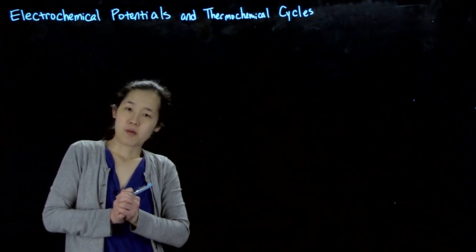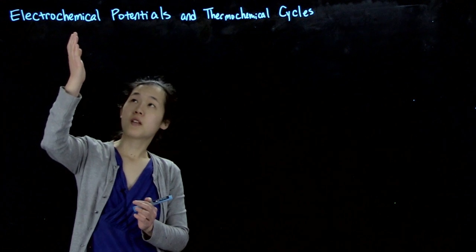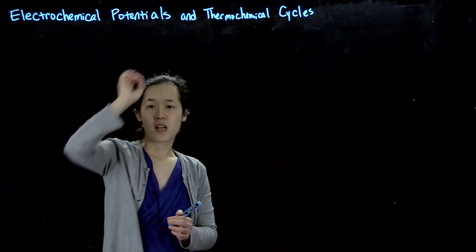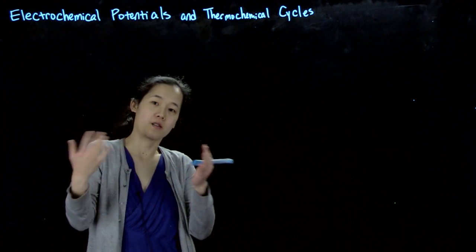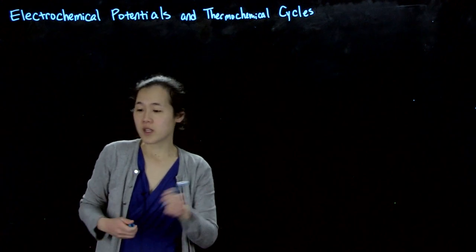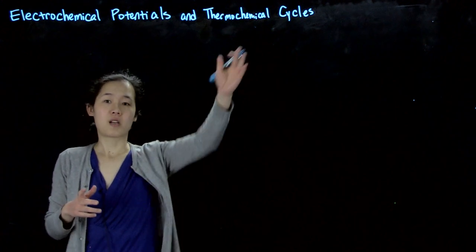One application of electrochemical potentials is that we can use them to relate to other aspects of chemistry and figure out other properties that we might want to know. So one thing when we do that is by the thermochemical cycle.